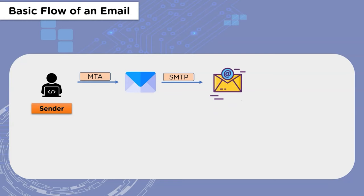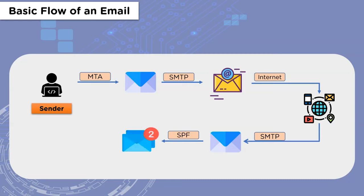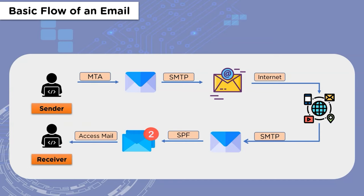The next step involves the transfer of the message between different mail servers, which is done through SMTP protocols. By this step, the mail is already in the recipient's mail server, also known as the MTA. All these steps are done over the internet where the Mail Delivery Agent checks whether the given email is spam or non-spam, using SPF — the Sender Policy Framework. If the check fails, the email is termed as spam; if not, it continues to the receiver's mailbox.